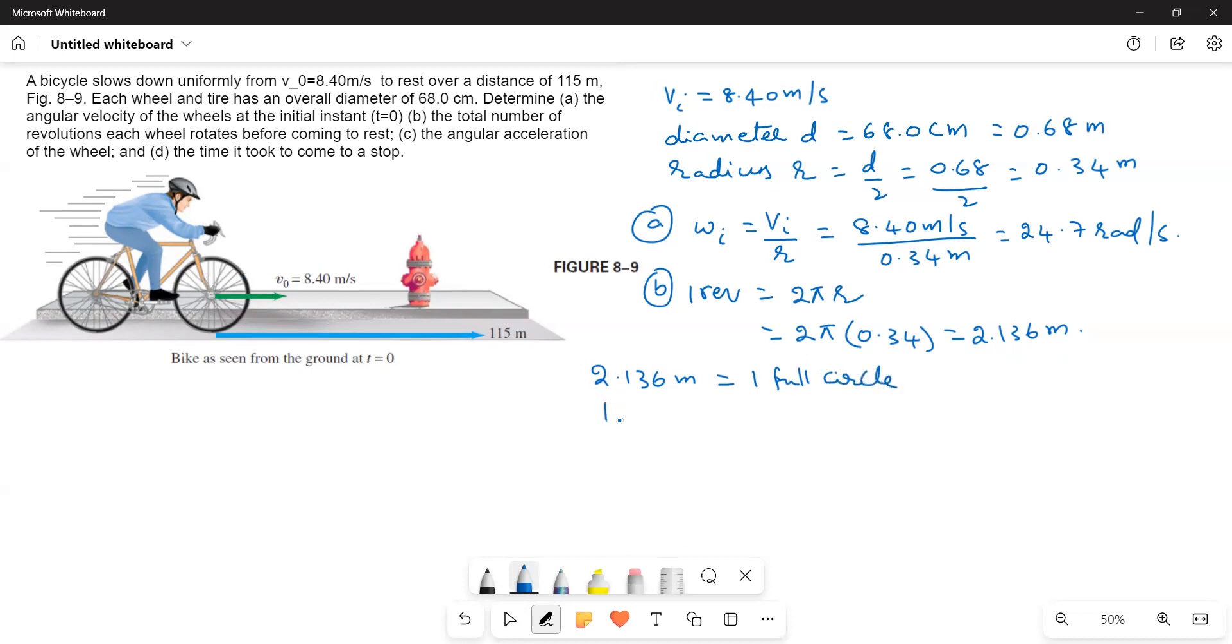In 115 m, how many full circles? 115 divided by 2.136 gives a value of 53.83 revolutions. That means 53 full circles will move, plus the remaining portion.